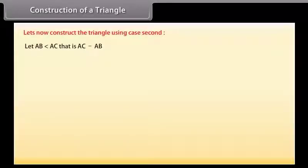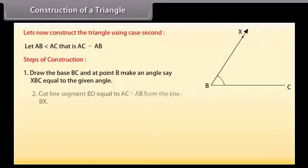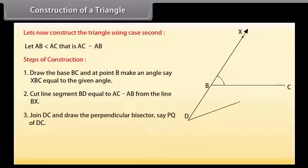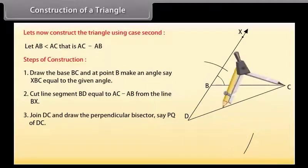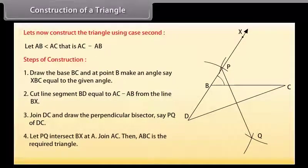Let's now construct the triangle using case two, when AB is less than AC, that is AC minus AB is given. First of all, draw the base BC and at point B make an angle XBC equal to the given angle. Next, cut the line segment BD equal to AC minus AB from ray BX. Now join DC and draw the perpendicular bisector PQ of DC. Let PQ intersect BX at A. Join AC. Then ABC is the required triangle.